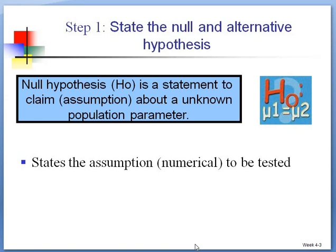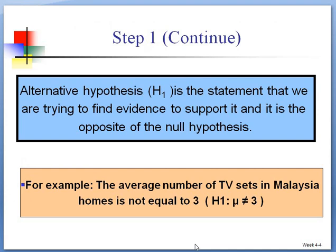Step 1: State the null hypothesis and alternative hypothesis. This chapter is very important for your final exam, so please focus. Normally, we have two marks in exam. Null hypothesis is a statement to claim the assumption about an unknown population parameter. Alternative hypothesis is the statement that we are trying to find evidence to support it and it is the opposite of the null hypothesis.